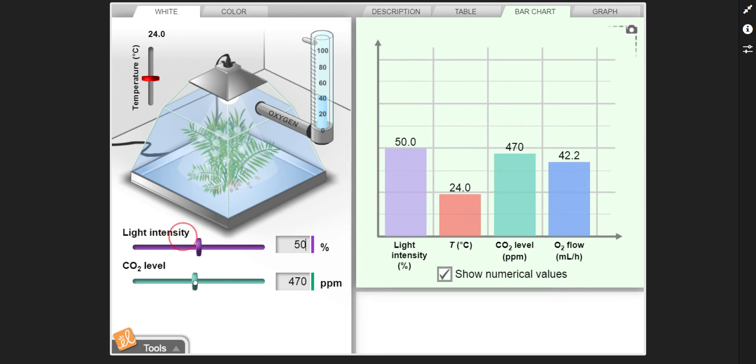So carbon dioxide was our limiting factor. So then we go back to our questions and it's asking us, were you able to increase it? Yes, we were able to increase it. Question two, what was the limiting factor? How do you know? Well, when we adjusted temperature, did oxygen flow go up? No. When we adjusted light intensity, did oxygen flow go up? No. When we adjusted CO2, did it go up? Yes. So CO2 is our limiting factor.